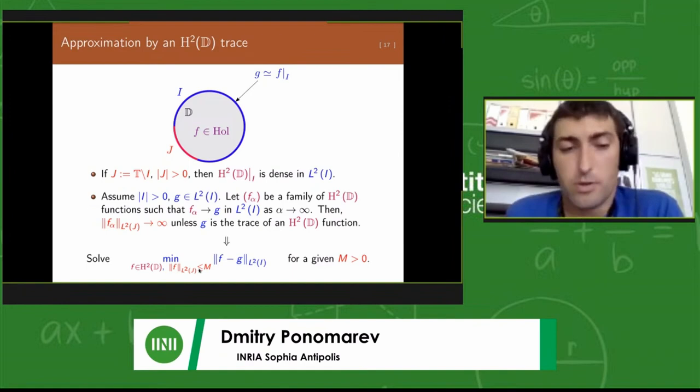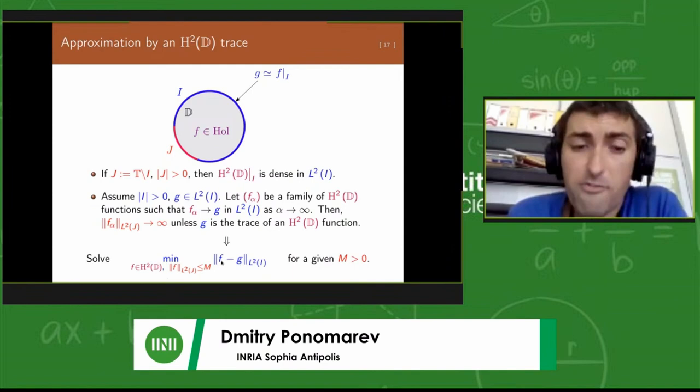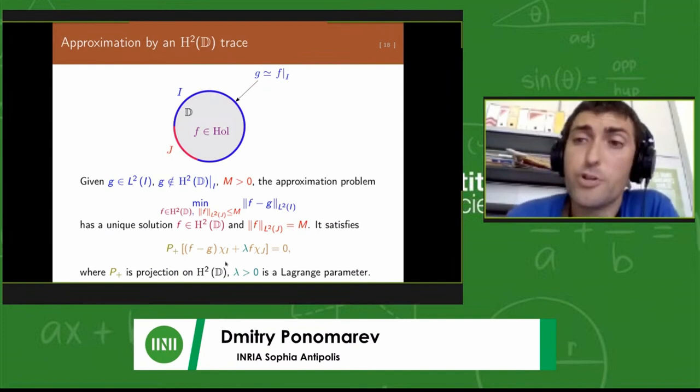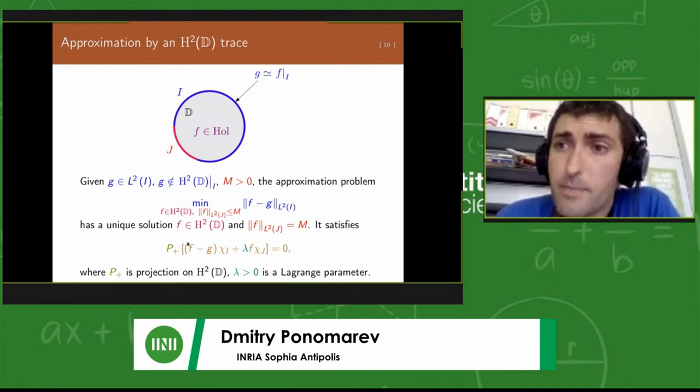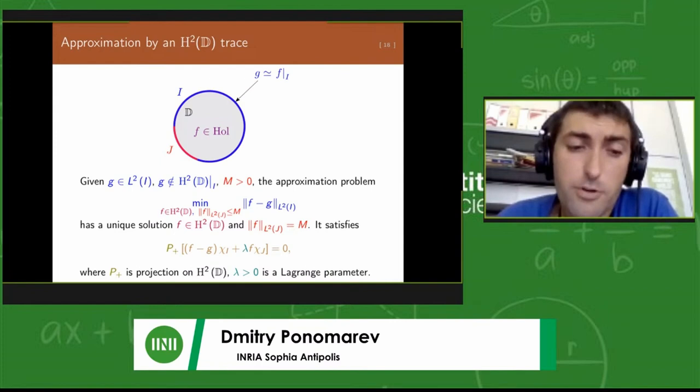It's such a subspace that the Fourier coefficients of negative order must vanish. These are exactly those functions which would extend analytically inside the disk, so there will be no negative powers. The traces of Hardy functions are dense in the L2 of i. That means we can, given a function g on i, approximate it arbitrarily close by Hardy functions.